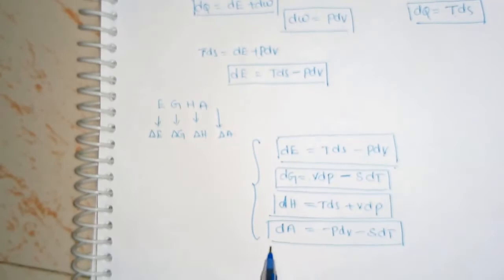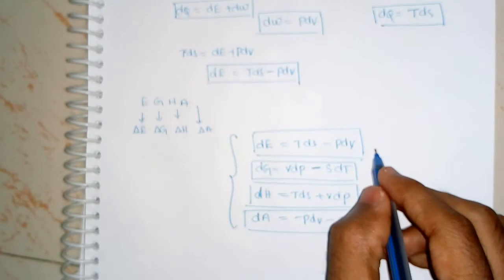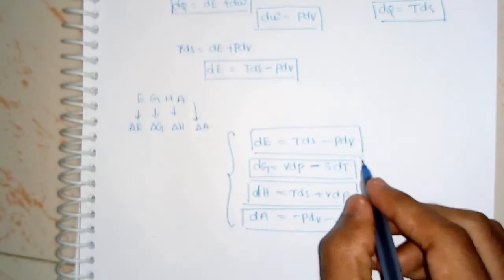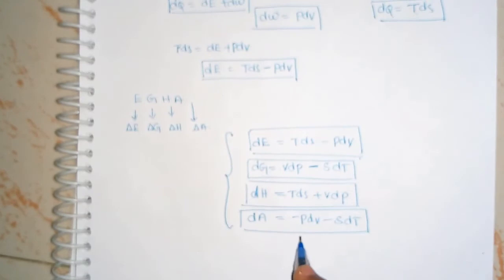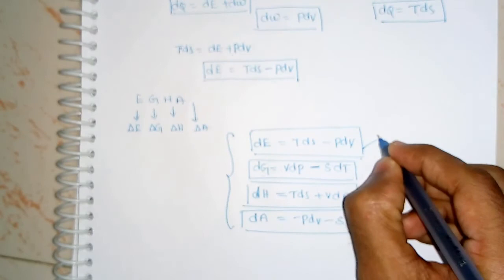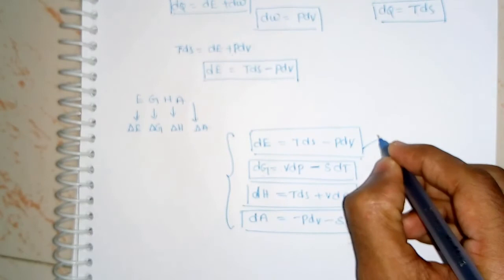These four are the Gibbs equations, which are very important in any exam. Using this shortcut trick, we can easily attempt these in any exam. We must remember the first relation DE = TDS − PDV, and from it we can derive the other three relations. Thank you for watching this video.